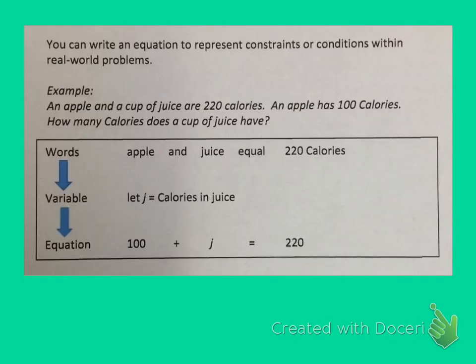Now that we know what words indicate each operation, we can write equations to represent constraints or conditions within real world problems. An example would be an apple and a cup of juice are 220 calories. An apple has 100 calories. How many calories does a cup of juice have? Using our nosy, let's go ahead and highlight the question and then any other important information. So the question says, how many calories does a cup of juice have? And that tells us right away that our unknown is how many calories are in a cup of juice.